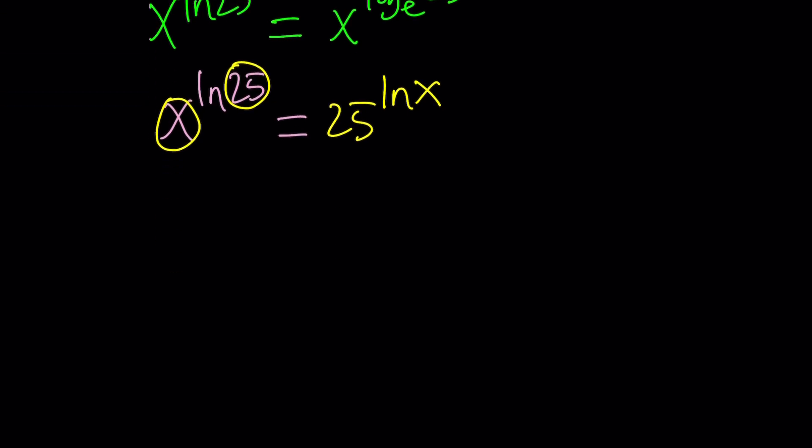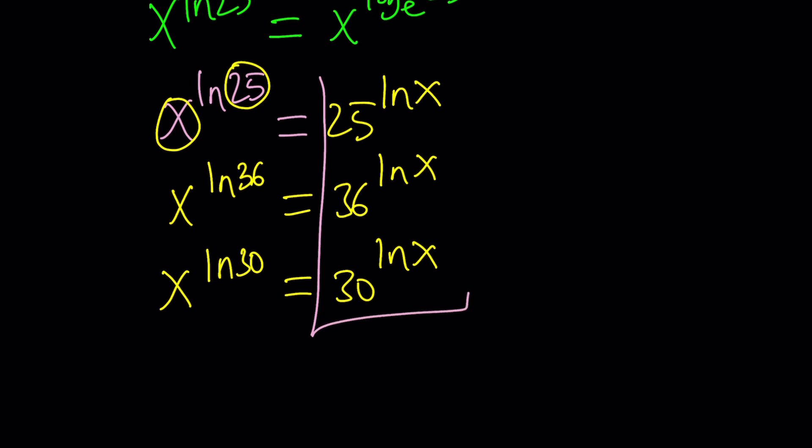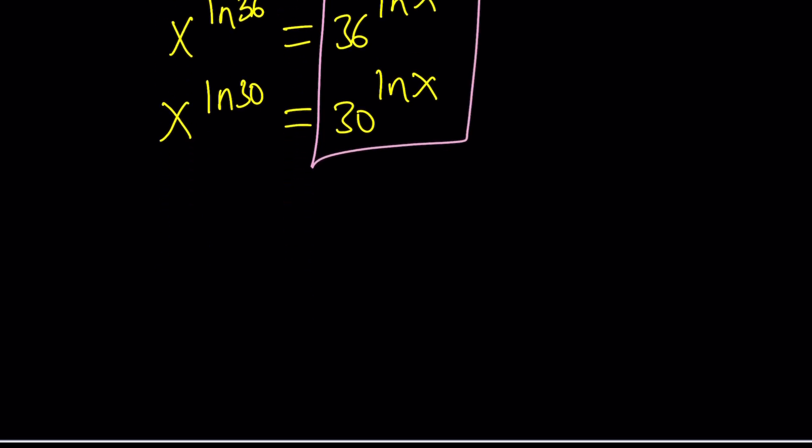Because our expression, this can be done over and over. So now, x to the power ln 36 can be written as 36 to the power ln x. And x to the power ln 30, similarly, can be written as 30 to the power ln x. Now take a look at this.